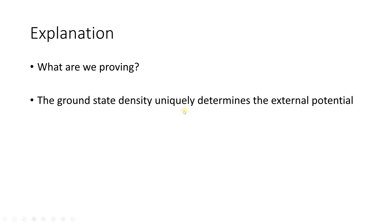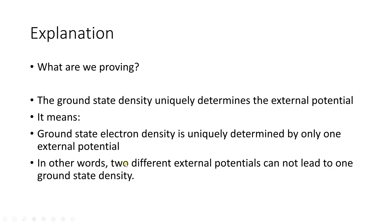The ground state density uniquely determines the external potential. This means that if we have the ground state electron density, it can be determined by only one external potential. In other words, two different external potentials — meaning two different arrangements of nuclei — cannot lead to the same ground state electron density.